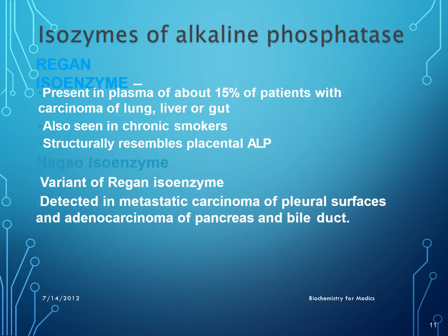There are two additional isoenzymes. The Regan isoenzyme is present in the plasma of about 15% of patients with carcinoma of the lung, liver, and orchid, and is also seen in chronic smokers. It structurally resembles placental alkaline phosphatase. The Nagao isoenzyme is a variant of the Regan isoenzyme and is detected in metastatic carcinoma of pleural surfaces and adenocarcinoma of the pancreas.